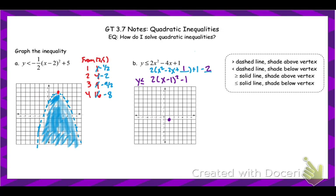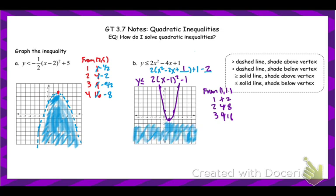This graph has been stretched vertically by a factor of 2. So from the vertex, multiply those y-values by 2: right 1 up 2, right 2 up 8. Since this is 'or equal to,' it is a solid line. Now it says y is less than, so we shade below the vertex. But what's below the vertex is outside the parabola — so we're shading outside. Everything outside is our solution.